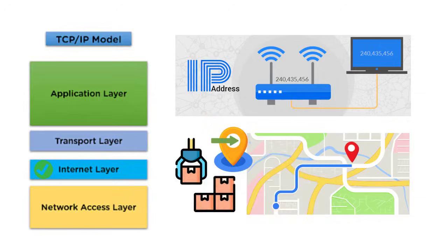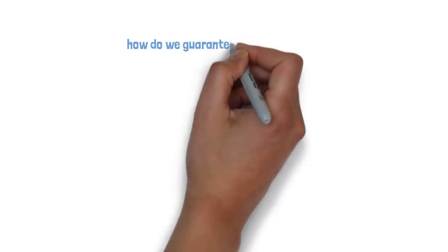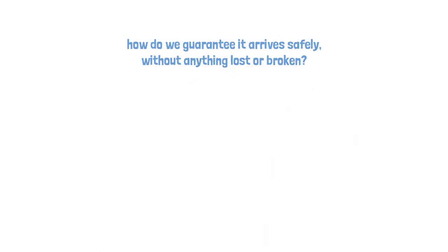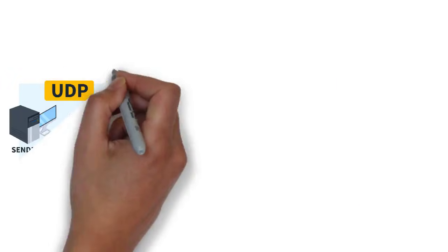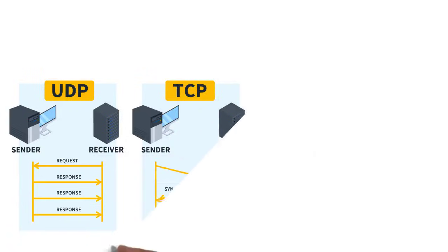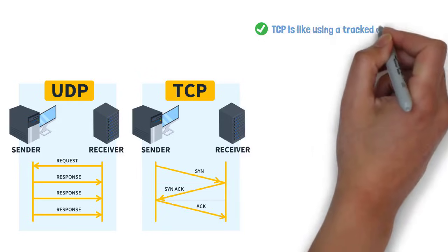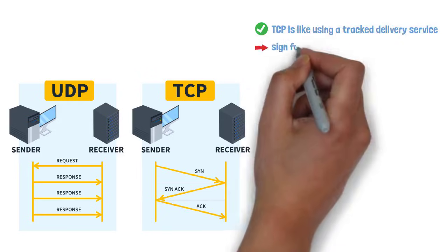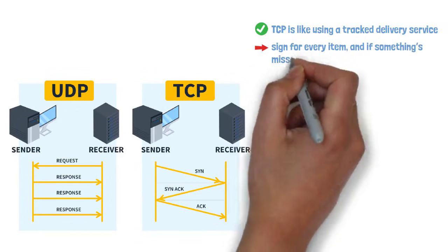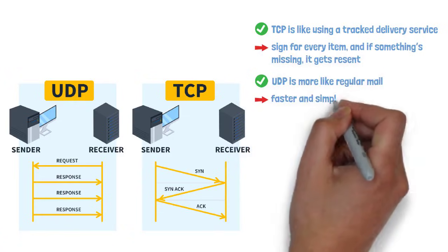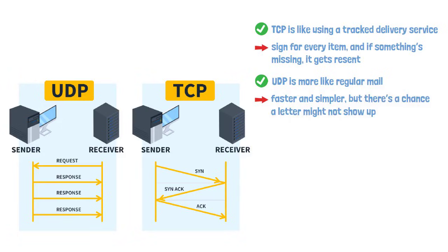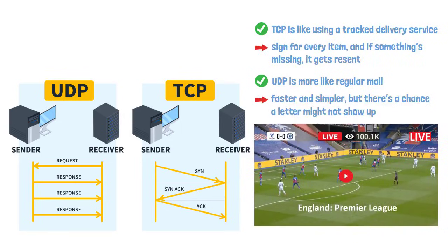Now your parcel's in the right city, but how do we guarantee it arrives safely, without anything lost or broken? Enter the Transport layer. This layer uses two main delivery styles: TCP, Transmission Control Protocol, and UDP, User Datagram Protocol. TCP is like using a tracked delivery service — you sign for every item, and if something's missing, it gets re-sent. UDP is more like regular mail: faster and simpler, but there's a chance a letter might not show up, which is fine for things like live sports streams or video games, where speed matters more than perfection.